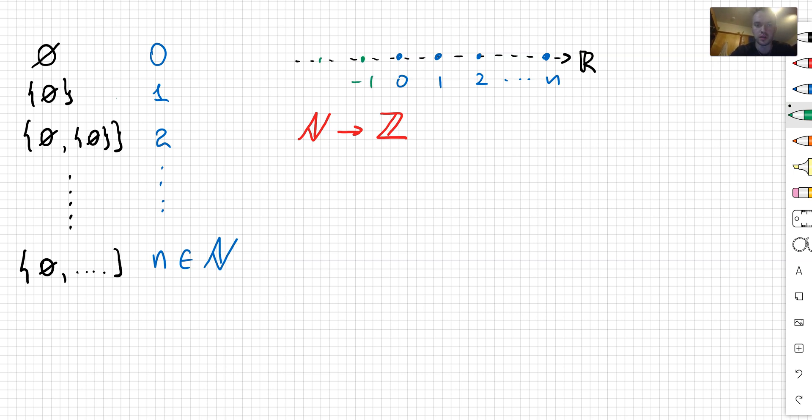So what I'm going to obtain is negative 1, negative 2, etc. So right now we have integers.